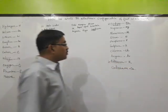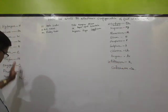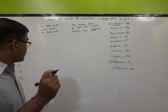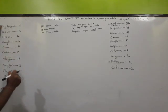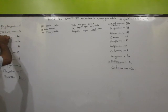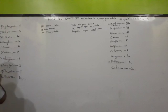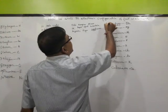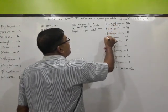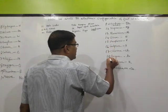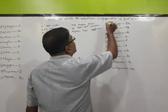So we have to learn 20 elements — what we can learn about them. We can learn from the atomic number. Hydrogen is 1, then serially 1, 2, 3, 4, 5, 6, 7, 8, 9, 10 — and then 11, 12, 13, 14, 15, 16, 17, 18, 19, 20. This is the atomic number.